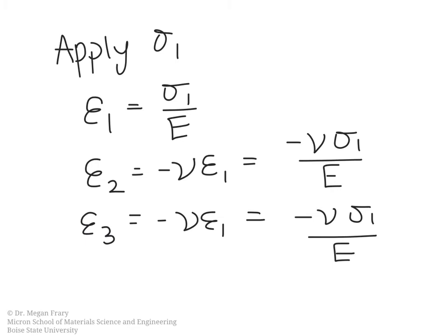Now I want to point out here, I'm saying that we're applying sigma one. This is another way of saying sigma one one if we're really using the full tensor notation, or that strain is epsilon one one, or epsilon two two, or epsilon three three.